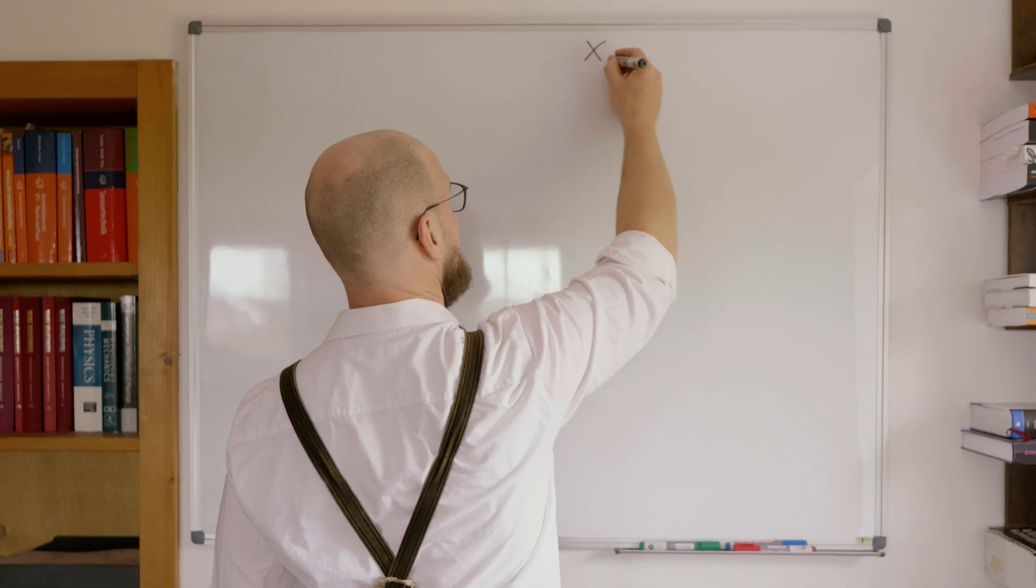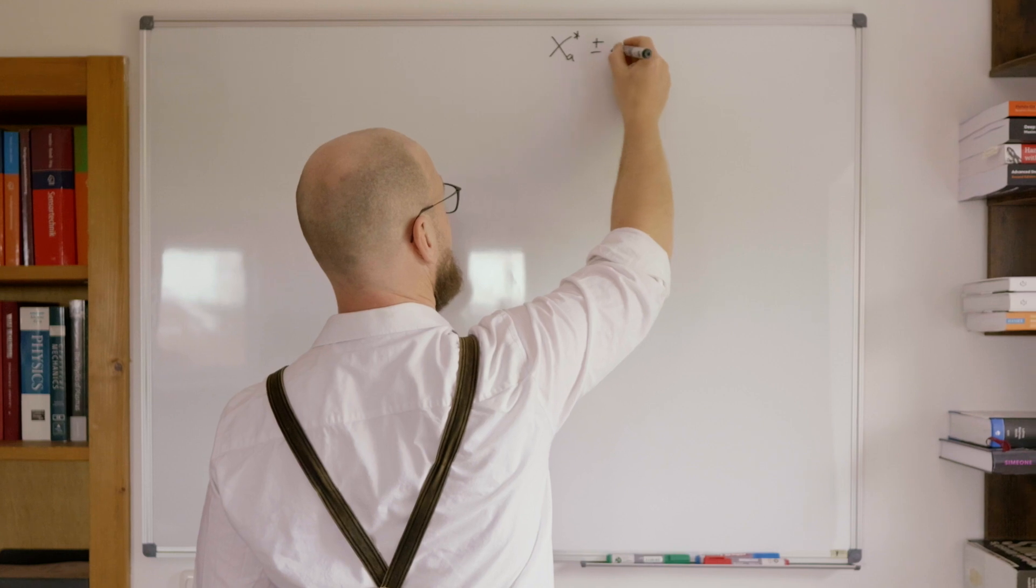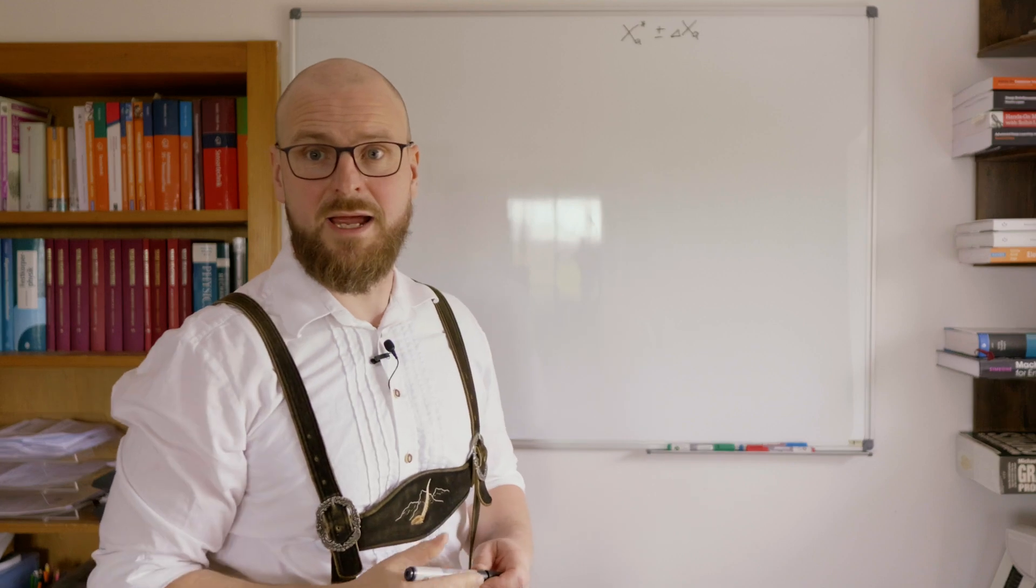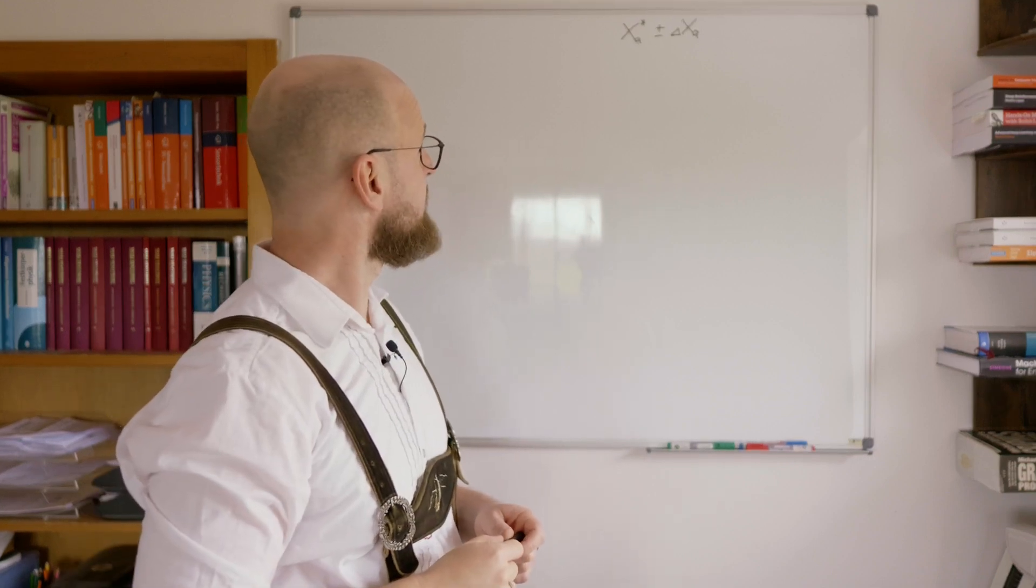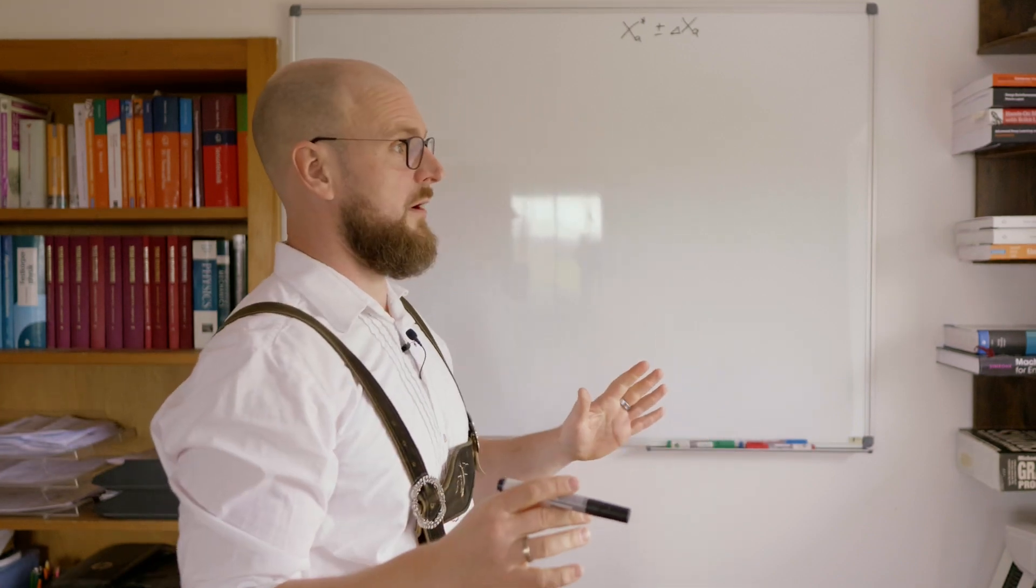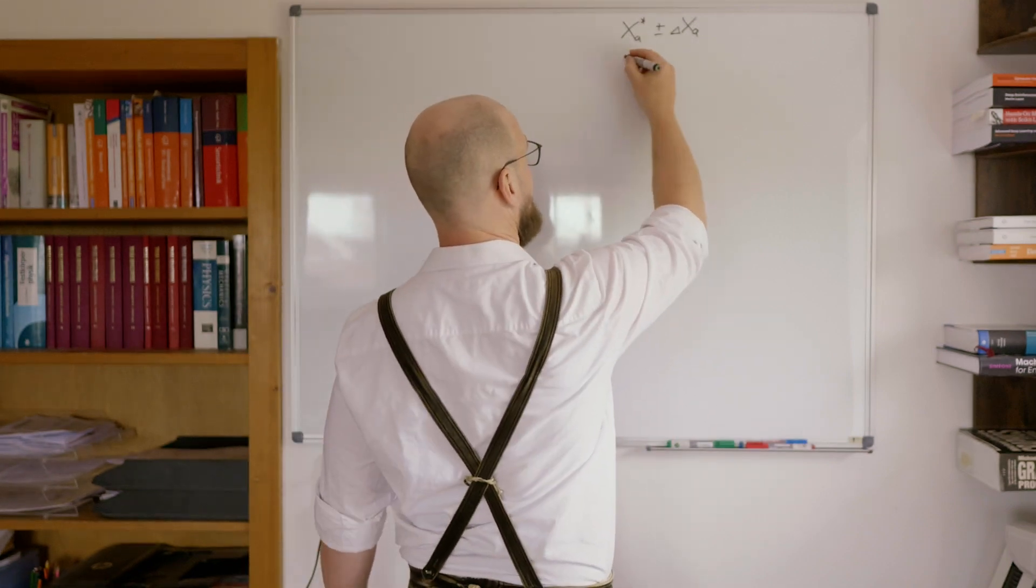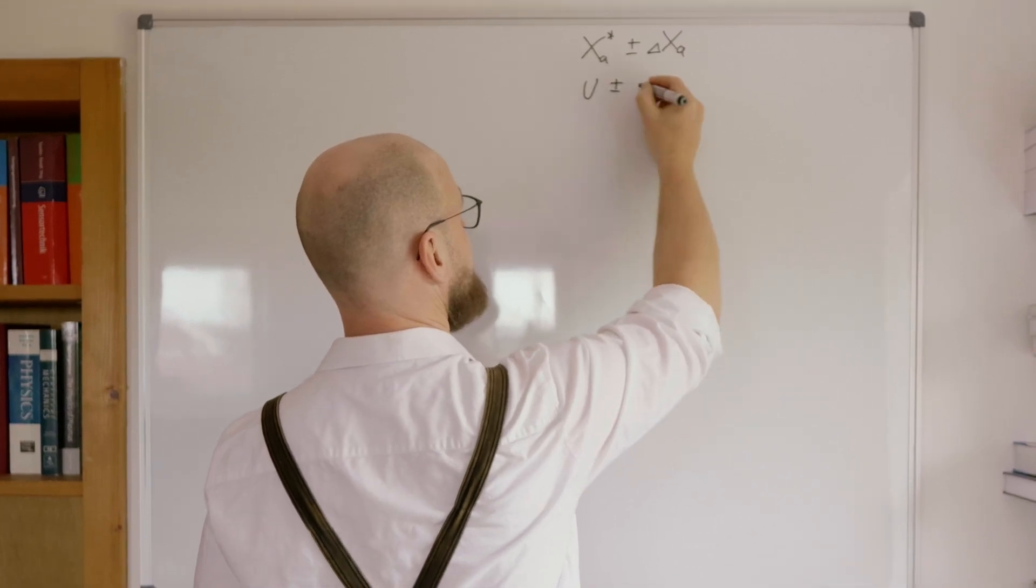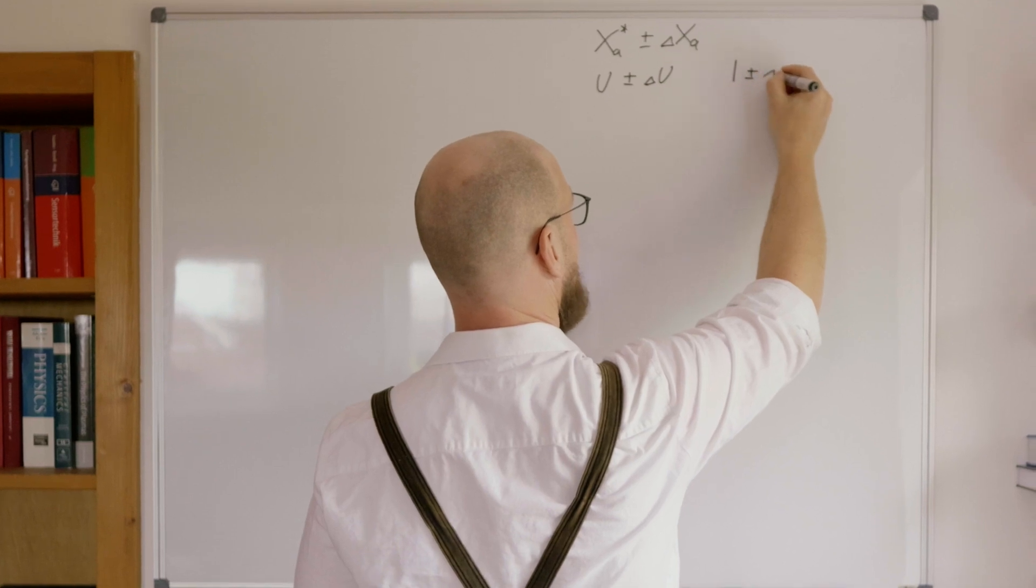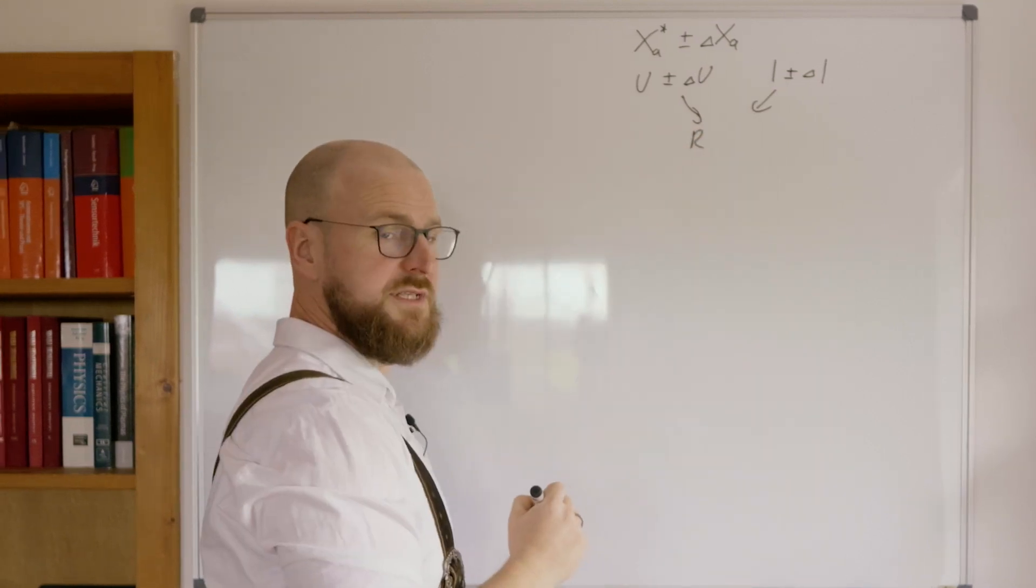we realized we can have some nice things. We can have a measurement xa with a certain error delta xa. That's nice. And now, for example, to give you a real example. We could have, for example, a voltage plus minus some error and a current plus minus some error for